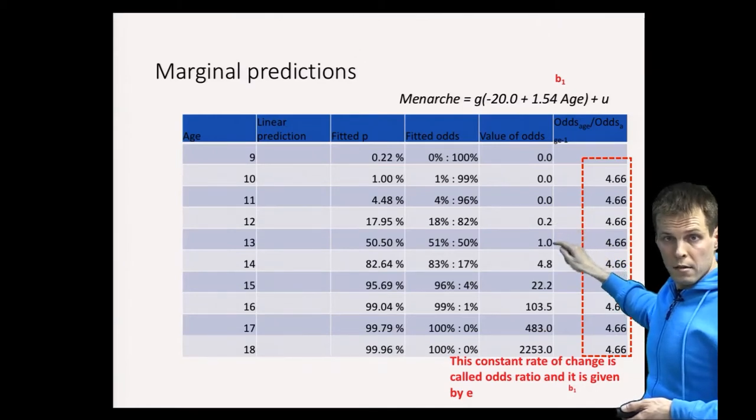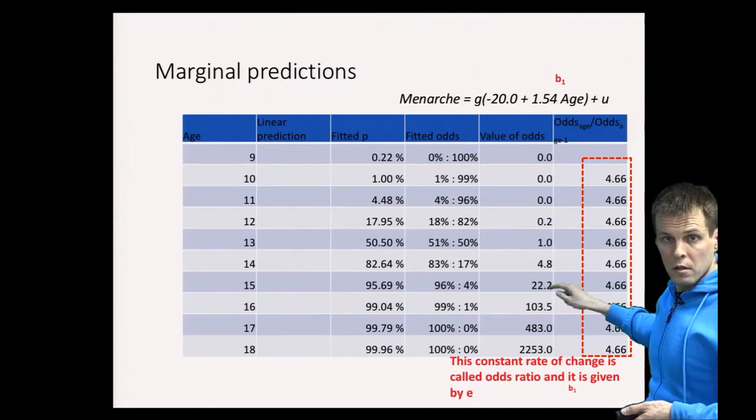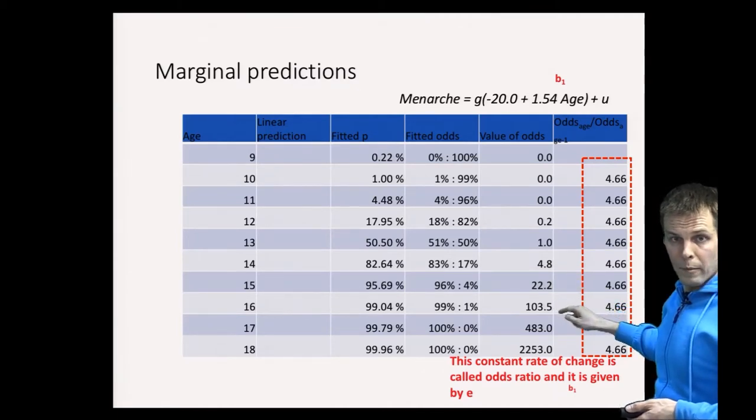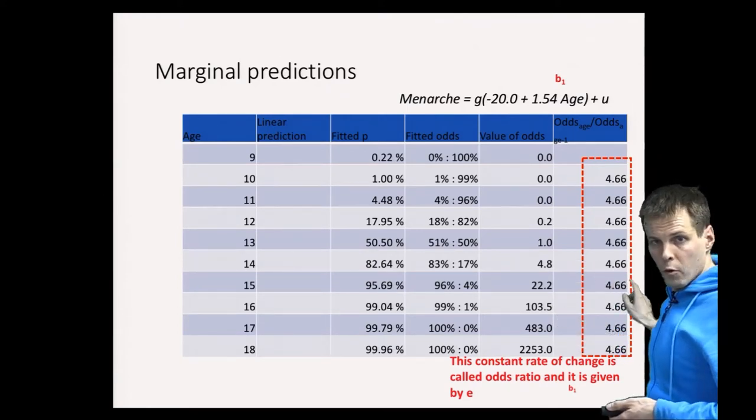So every additional year increases the odds by 4.6 units. So that's the odds ratio implementation. So these always increase 4.6.